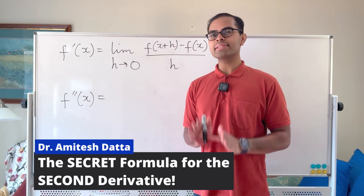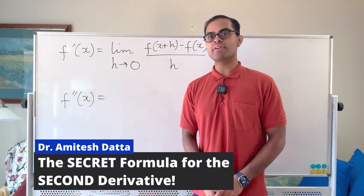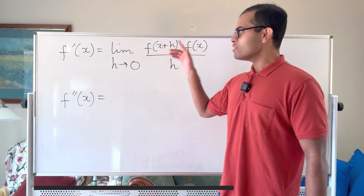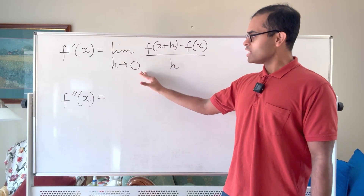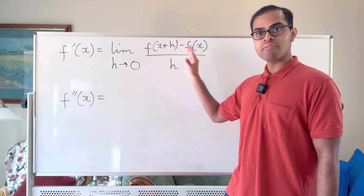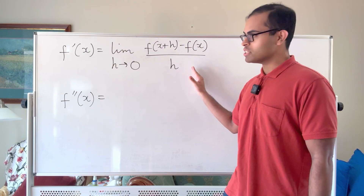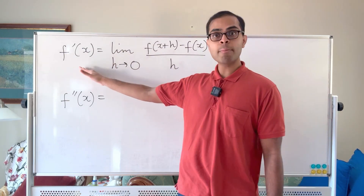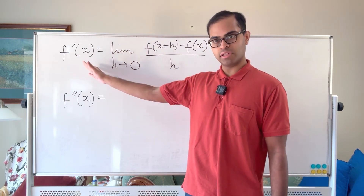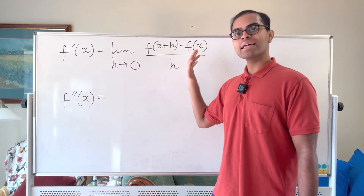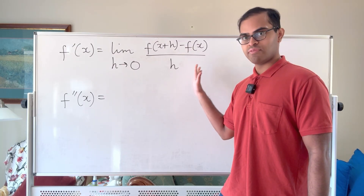I'm going to show you the secret definition of the second derivative. The first derivative we all know is equal to the limit as h goes to zero of f of x plus h minus f of x divided by h — that is f prime of x if the limit exists, in which case f is differentiable at x, and that is the instantaneous rate of change of f at x.